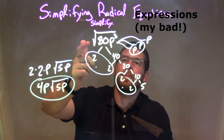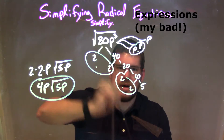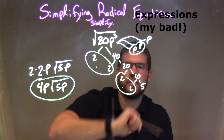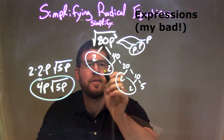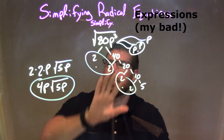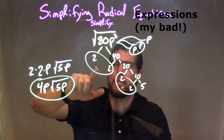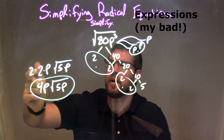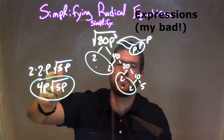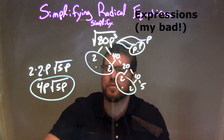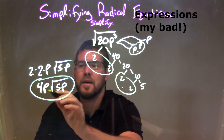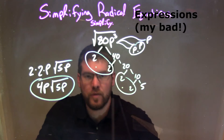Let's recap. We were given the square root of 80p to the third power. Doing the prime factorization, I have 2 times 2 times 2 times 2 times 5 times p times p times p. I circle my pairs — I have two pairs of 2 and one pair of p. I put each pair on the outside, and what's left inside the square root is just all the singles: 5 times p. I've then simplified that to get my final answer of 4p times the square root of 5p.